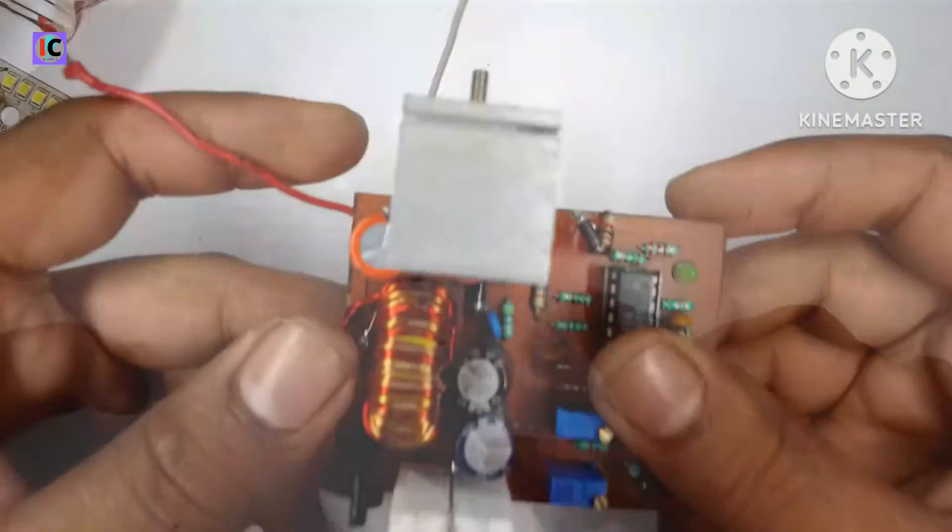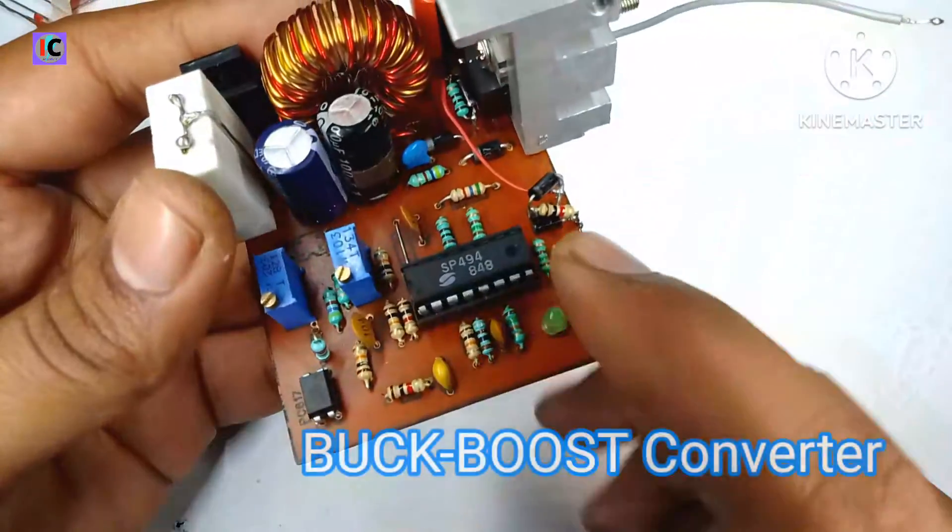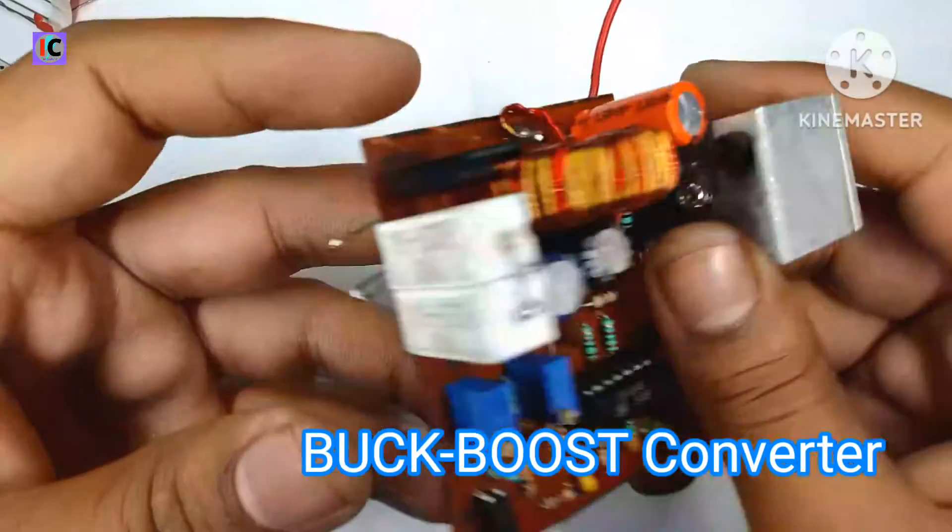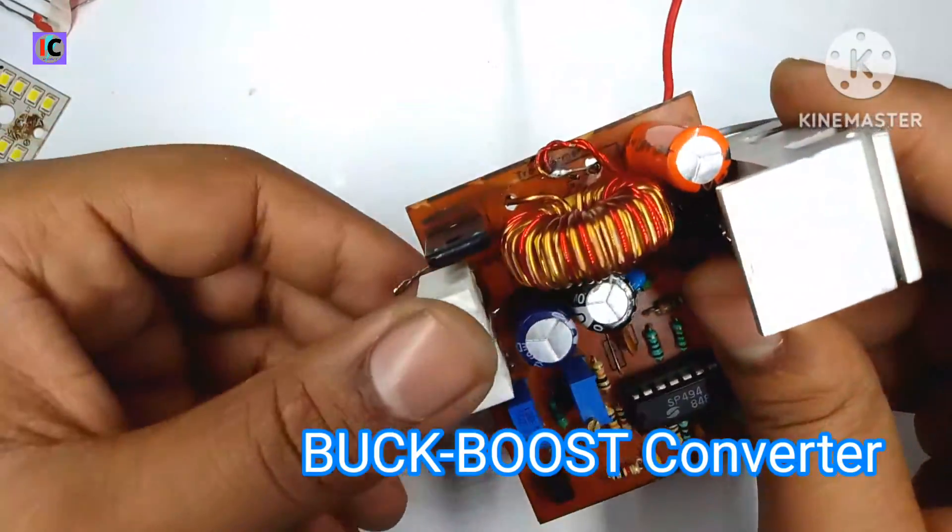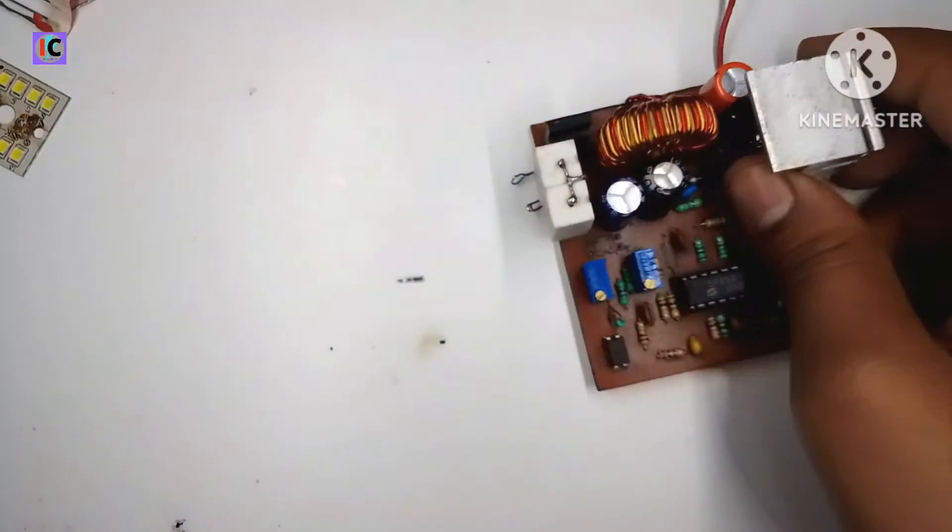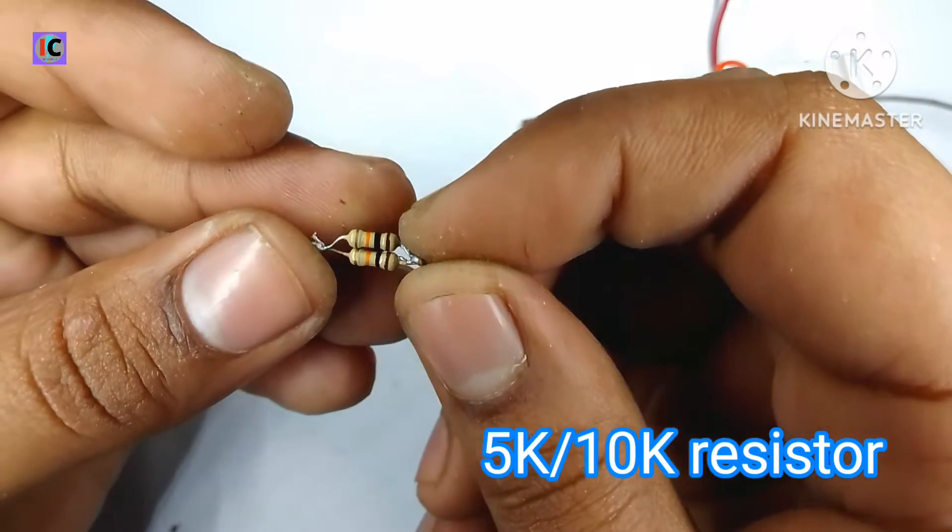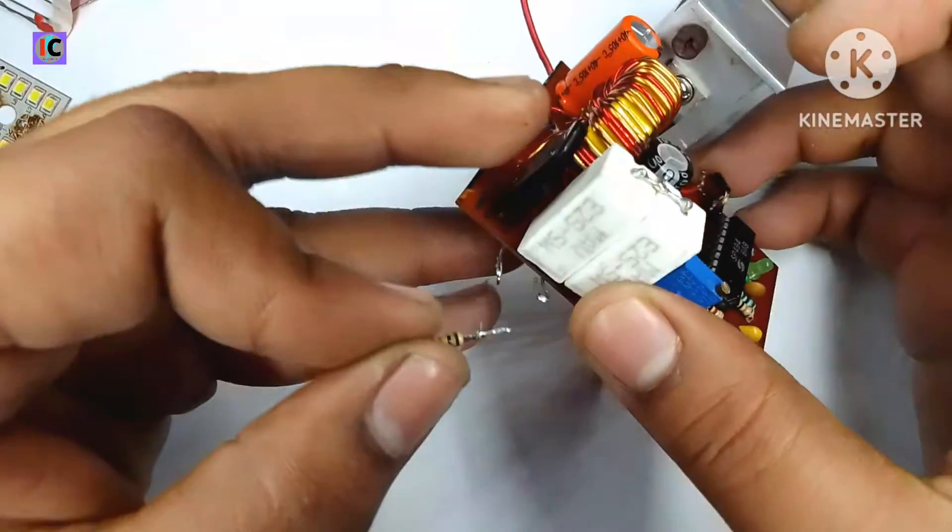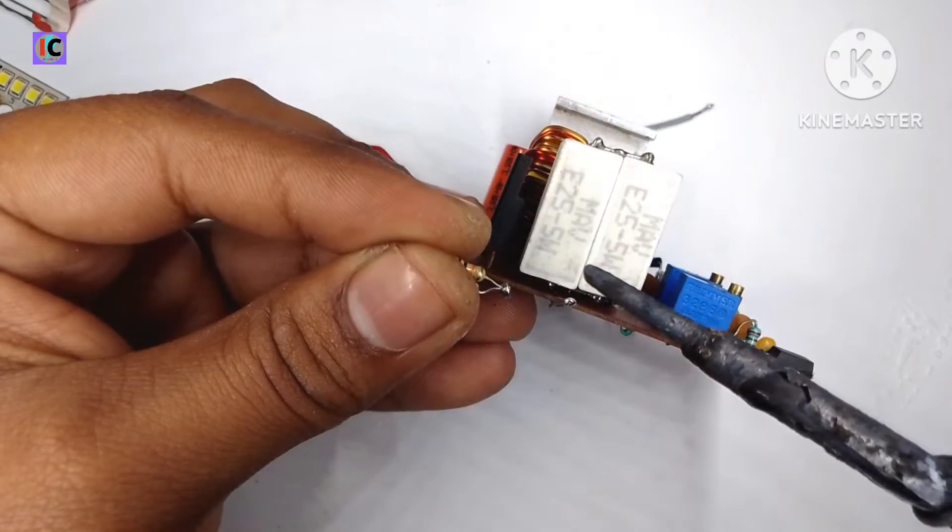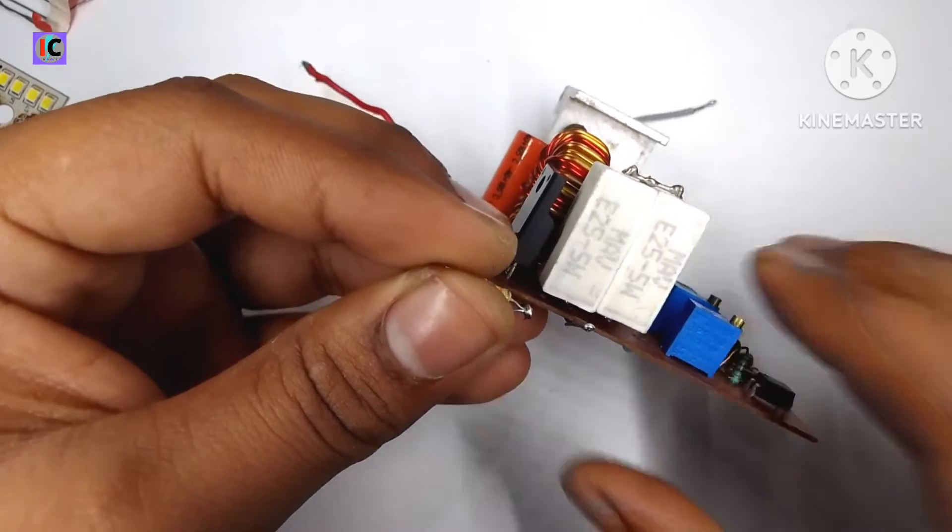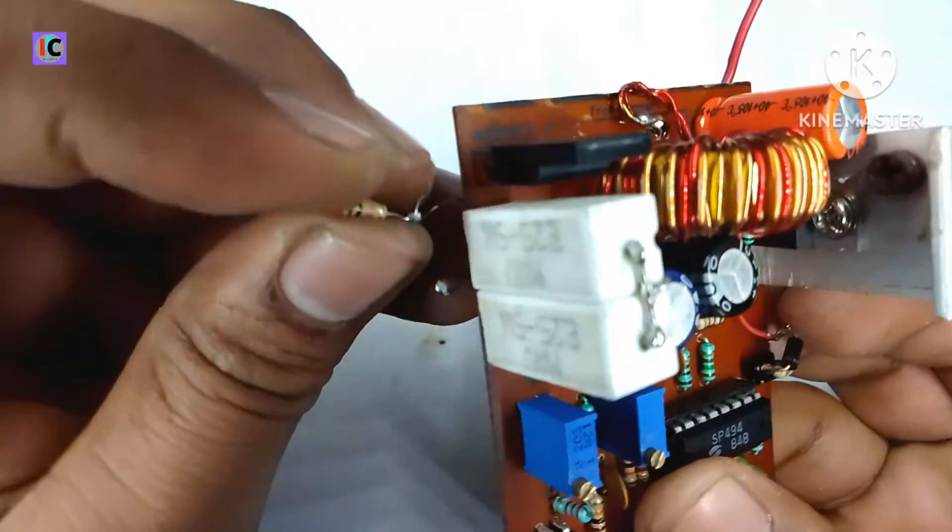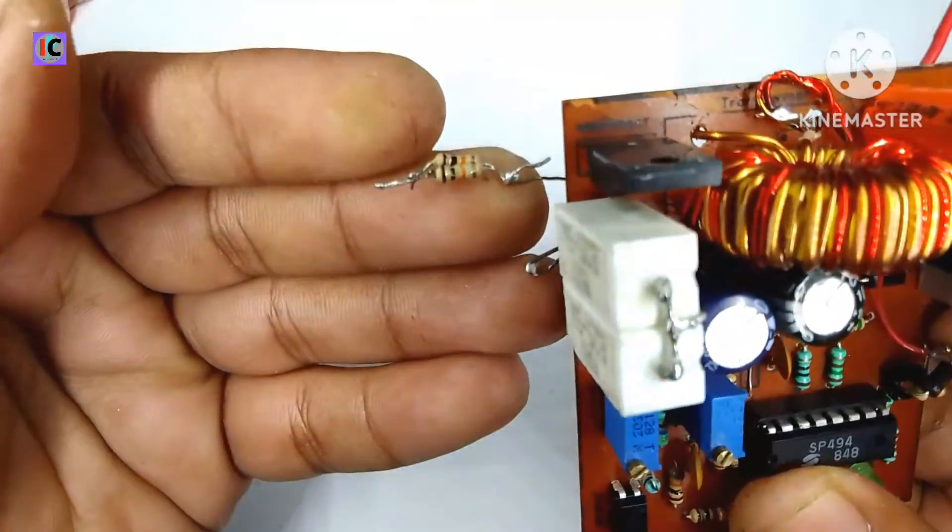So let's start. Here I am using a buck and boost converter for which I make a high voltage up to 60 volts DC. This is the 10 kilohm resistor which is connected in parallel.